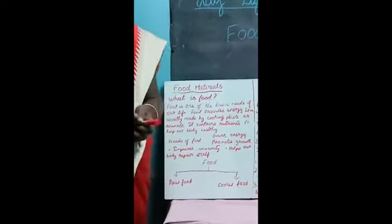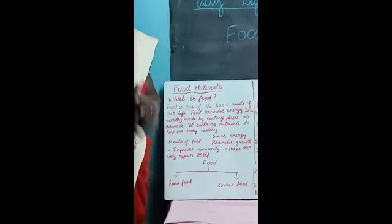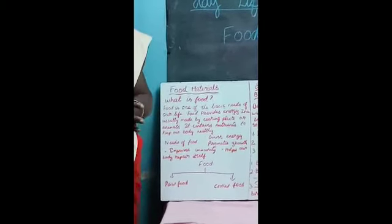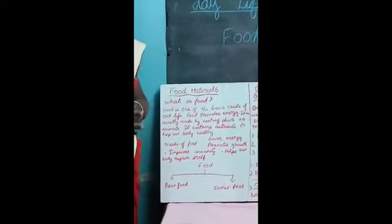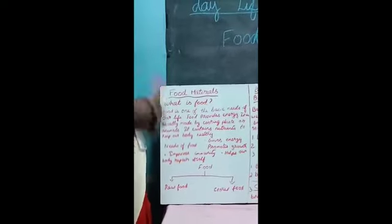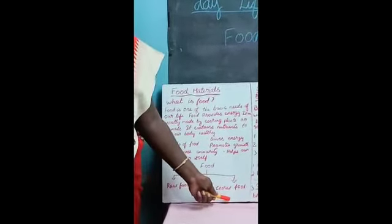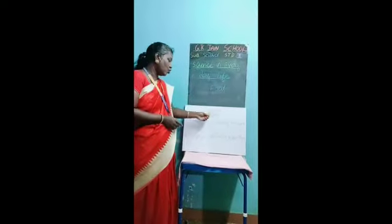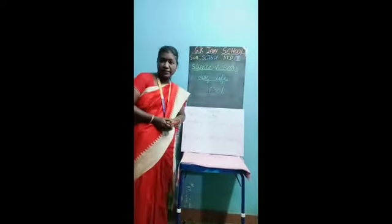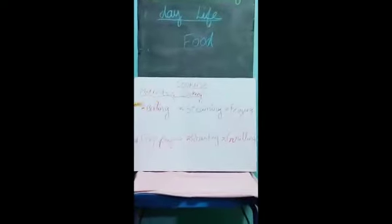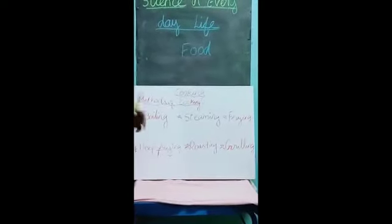Cooked food means you have to cook it and then eat — that is called cooked food. Whatever foods you have, if you cannot eat directly and you have to cook them first, then only you can eat — that is cooked food. Cooked food has so many methods. Methods of cooking: food is classified into two types — one is raw food material and the other involves cooking methods. There are six types of cooking methods.